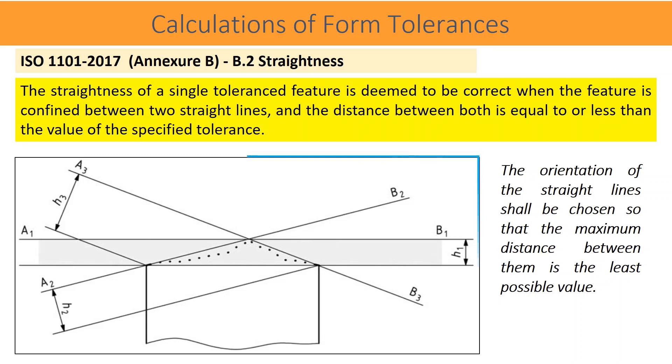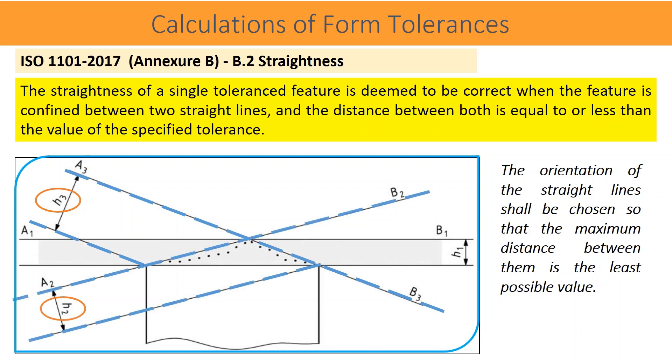According to ISO 1101 2017, straightness: the straightness of a single tolerance feature is deemed to be correct when the feature is confined between two straight lines and the distance between both is equal to or less than the value of the specified tolerance. For the measured points on the given example, there could be more possibilities to fit the geometry and calculate the form tolerance. All three cases are possible, but which one should be correct and accepted? The orientation of the straight lines shall be chosen so that the maximum distance between them is the least possible value. Therefore, form error H1 is the most appropriate value in the given example.